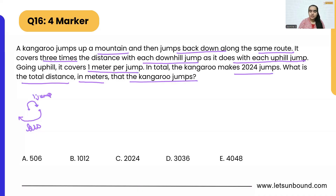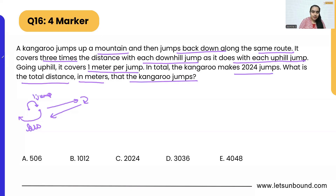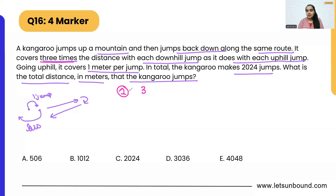If we find the distance of either the uphill or downhill path, we can double it to get the total distance. The key line is that it takes three times the distance per downhill jump. From this we can make a ratio: one jump going up covers one part, while coming down it covers three parts. So in the ratio form, in total we are getting four parts.